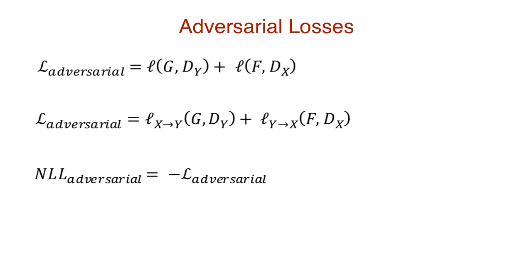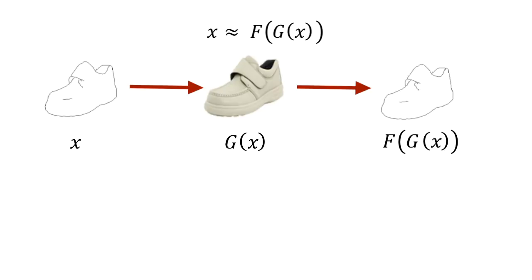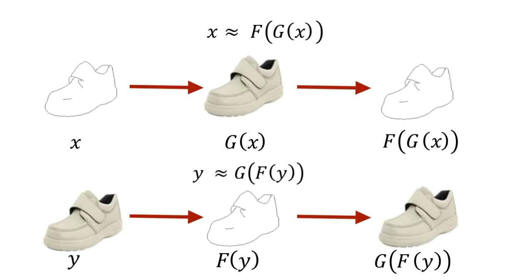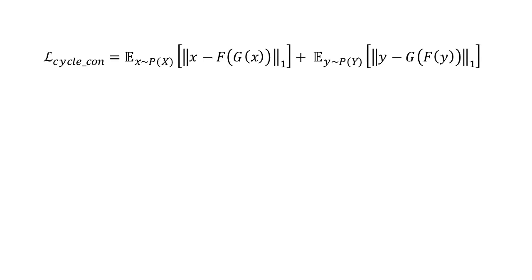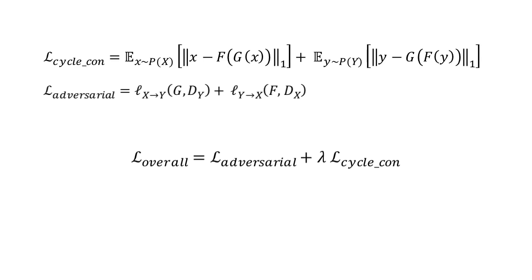Let's talk about the second type of loss: cycle consistency loss. Since we have two GANs to train, we have two cycle consistency losses — forward cycle consistency and backward cycle consistency. Forward cycle consistency is established when the source image in X matches its transformation after applying G, followed by its inverse F. Similarly, backward consistency is established when an image in the output space Y is retained when F and its inverse G are applied in succession. We can define both losses as a measure of the L1 distance. The overall loss is a linear combination of both the adversarial loss and the cycle consistency loss, where lambda controls the relative importance of the adversarial losses.